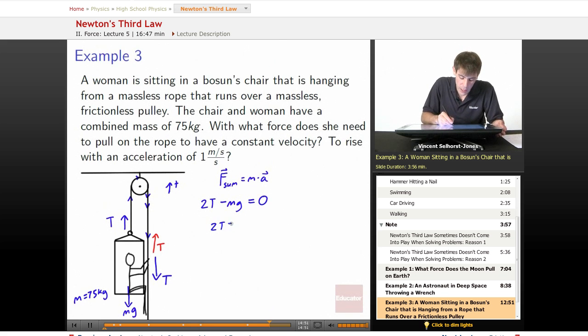So we've got 2T equals Mg. Now we just start plugging things in. T equals 75 times 9.8 divided by 2. We solve this out and we get the tension that she needs to put into the rope is equal to 367.5 Newtons.